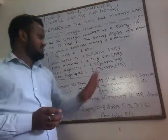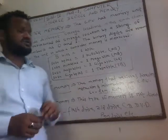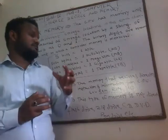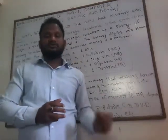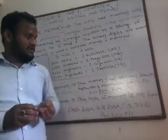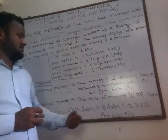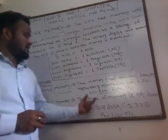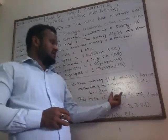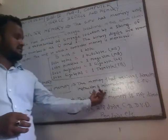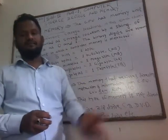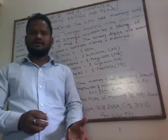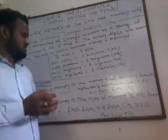Primary memory is the memory that receives instructions and information directly from the CPU. It is already installed in the computer. The main examples are RAM and ROM — RAM is random access memory, and ROM is read only memory — which will be detailed in the next part, covering how they work and how much power is used.